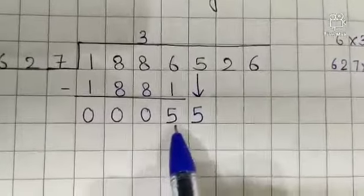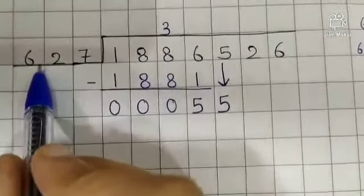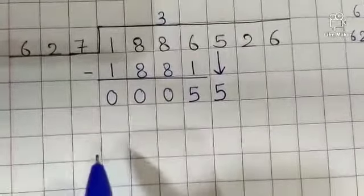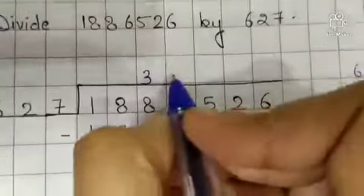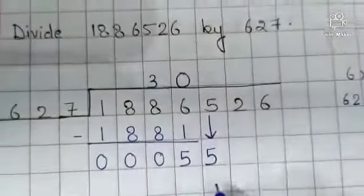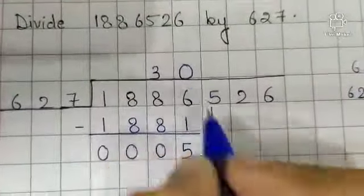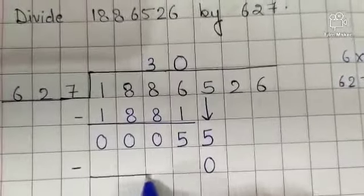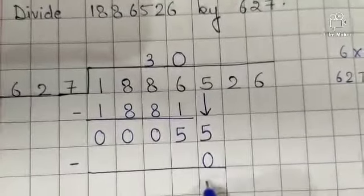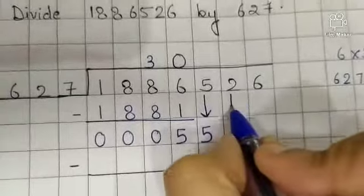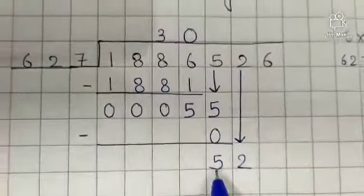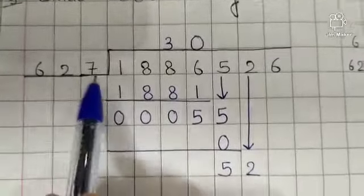See, 55 is less than 627 and we can't divide 55 by 627. So put a 0 in quotient. And 627, 0's are 0. So 5 minus 0 is 5. Now copy down 2. Again, 52 is less than 627.